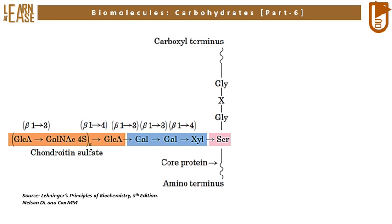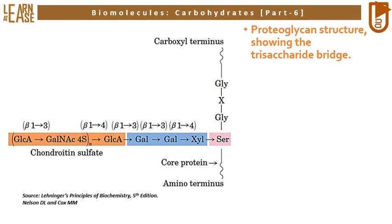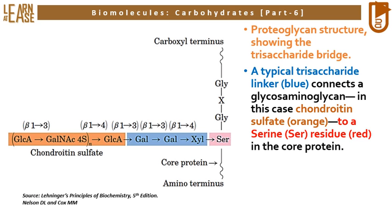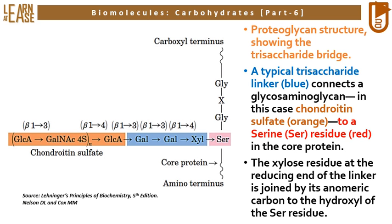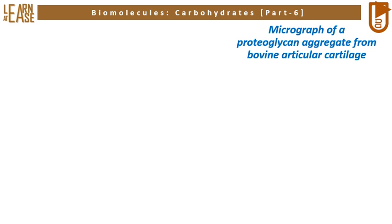The image represents the structure of proteoglycans, showing the trisaccharide bridge. A typical trisaccharide linker shown in blue connects a glycosaminoglycan — in this case chondroitin sulfate shown in orange — to a serine residue shown in red in the core protein. The xylose residue at the reducing end of the linker is joined by its anomeric carbon to the hydroxyl of the serine residue.